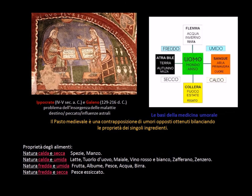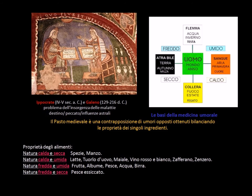Il buon funzionamento dell'organismo dipenderebbe dall'equilibrio degli elementi. Il pasto medievale era quindi un intreccio di contrapposizioni e di umori opposti, ottenuti bilanciando le proprietà dei singoli ingredienti. La società medievale si presenta stratificata e divisa in classi rigorosamente separate tra loro. In un'epoca in cui le carestie sono molto comuni, il cibo è un importante segno di distinzione sociale.